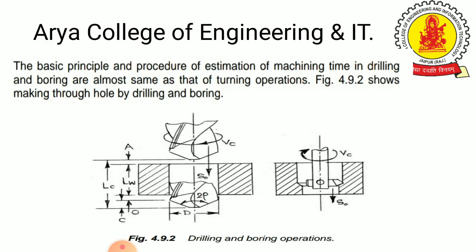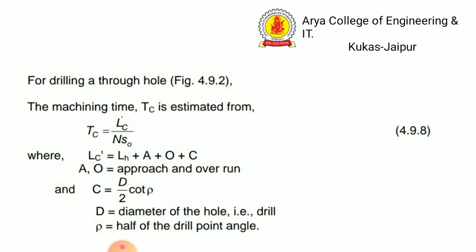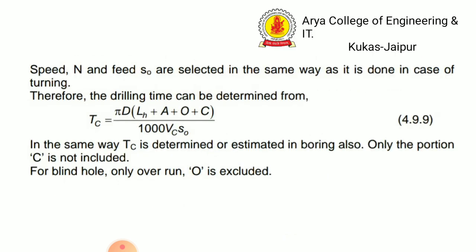From the figure, the full drill point angle is 2ρ, so half is ρ. Speed N and feed S0 are selected in the same way as in turning. The drilling time can also be determined from: Tc = (π × D × (Lh + A + O + C)) / (1000 × Vc × S0). In the same way, Tc is estimated in boring operations also.